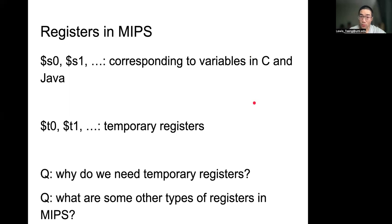There are many different types of registers in MIPS. Usually what we represent is we have a dollar sign and then a name. By convention, S0, S1 correspond to variables that we use in high-level language like C and Java. T0, T1 means the temporary register. Here you want to pause a bit to think about why do we really need to have temporary registers, and what are some other types of registers that usually can be found in MIPS.